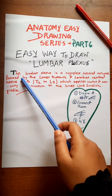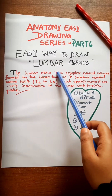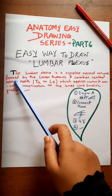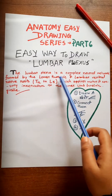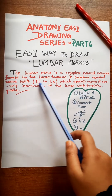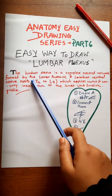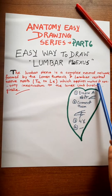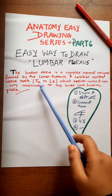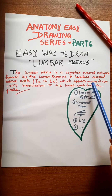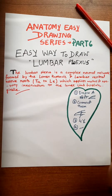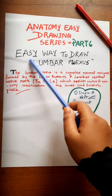First we will start to know what is Lumbar Plexus. Lumbar Plexus is a complex neural network formed by the lower thoracic and lumbar ventral nerve roots. It supplies motor and sensory innervation to the lower limb and pelvic region.